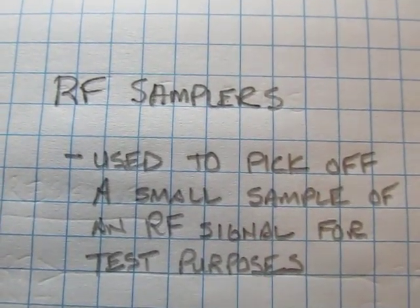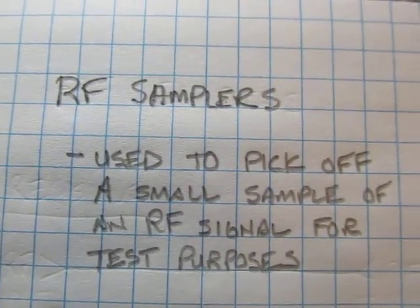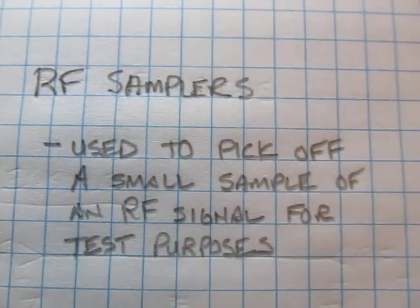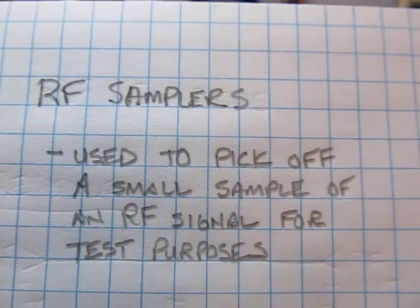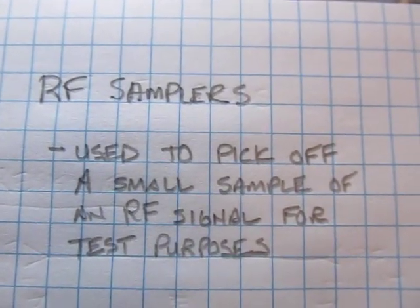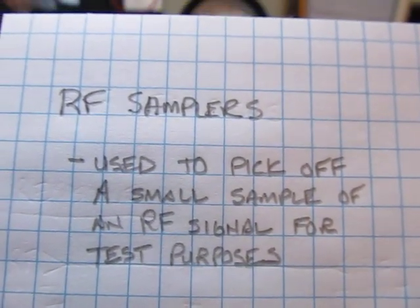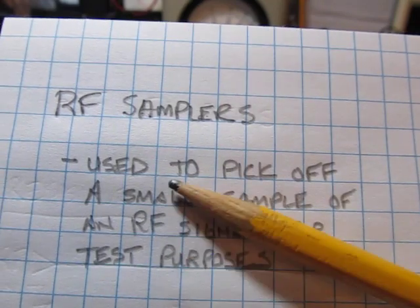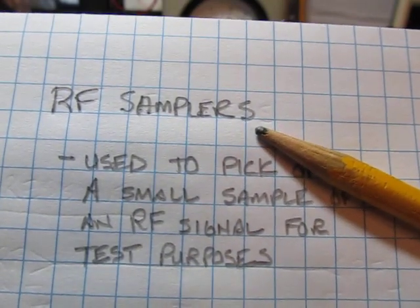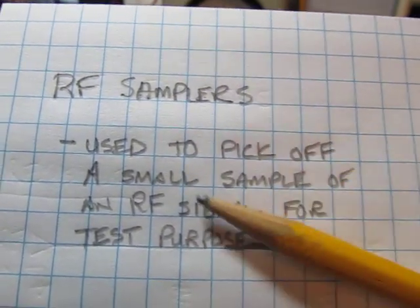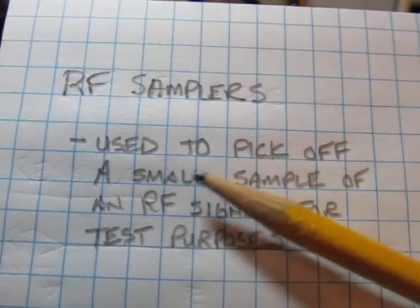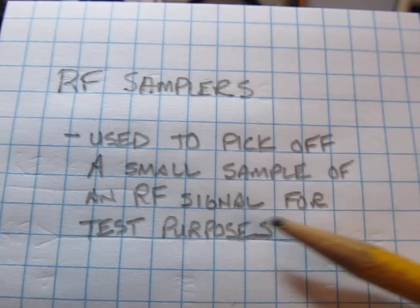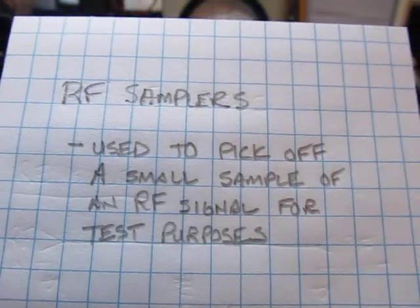This video is going to talk about RF samplers, about why you might want to use them, and a couple of examples of how to design them. An RF sampler, sometimes called an RF sampling T, is something used to pick off a very small amount of an RF signal for test purposes.